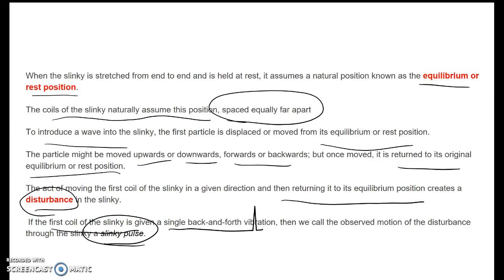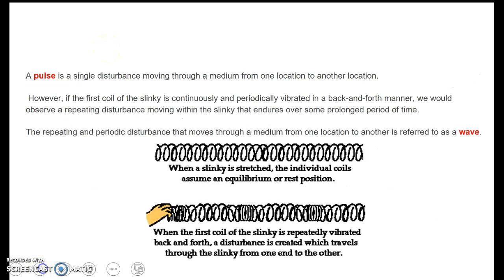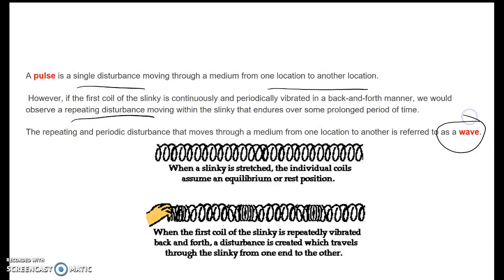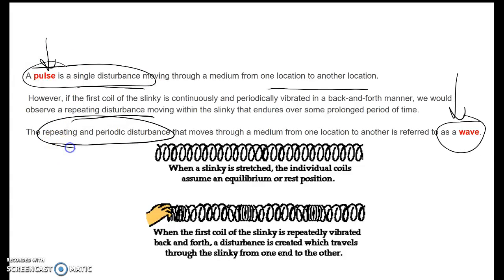If we do this for just one coil in the slinky in a single vibration — a simple single motion back and forth or up and down — it is called a pulse. A pulse is a single disturbance from one location to another. However, if we were to do this over and over, back and forth or up and down, we would have a repeating disturbance. This repeating disturbance is what is called a wave. A pulse is a single disturbance, while a wave consists of repeating periodic disturbances that move the medium.